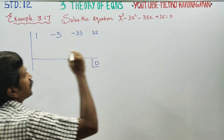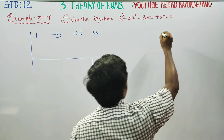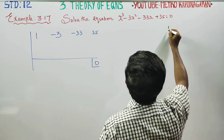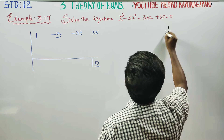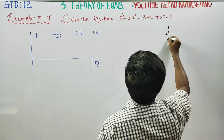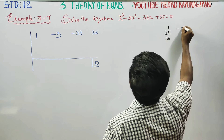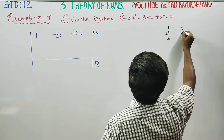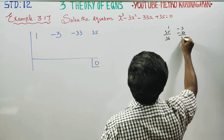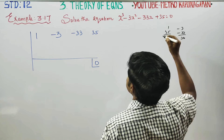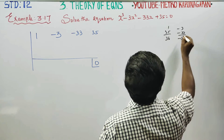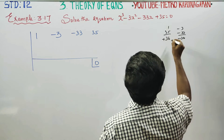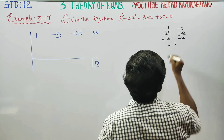Now applying clue 1: adding all coefficients — 1 and 35 add to 36, and -3 and -33 add to -36. So 36 and -36 together add to 0. Since the sum of all coefficients is 0, we can use +1.